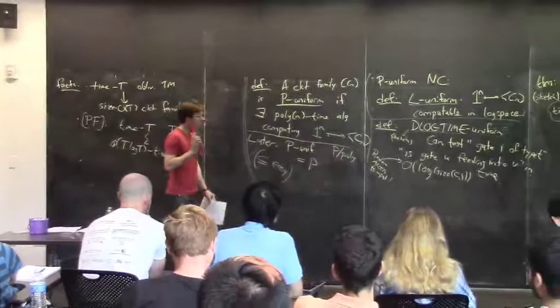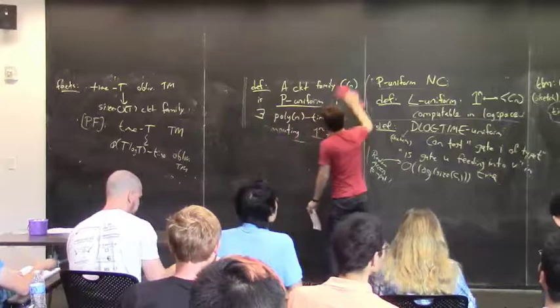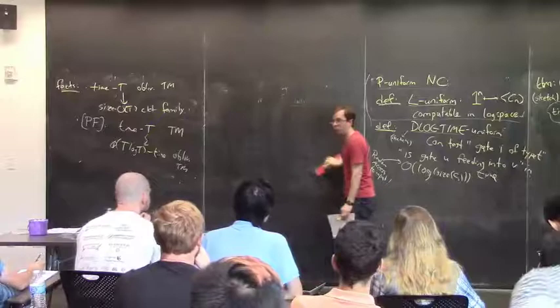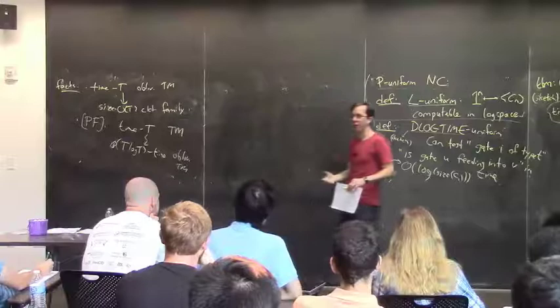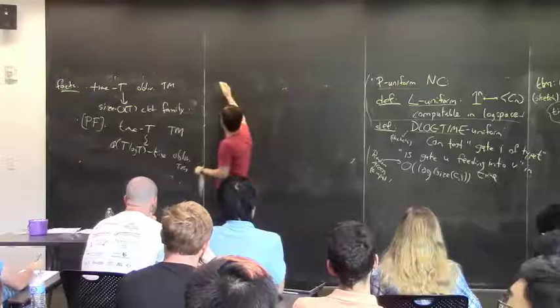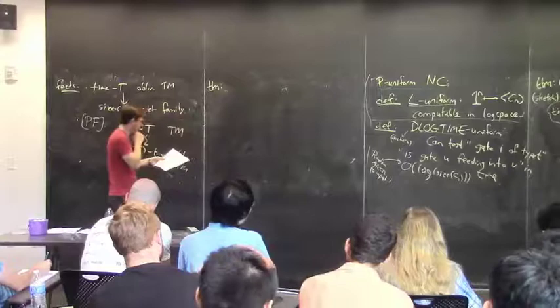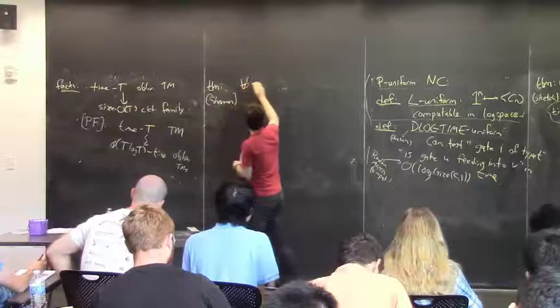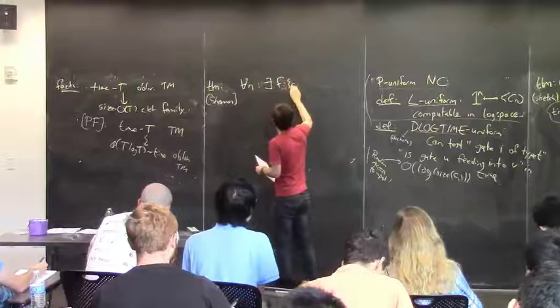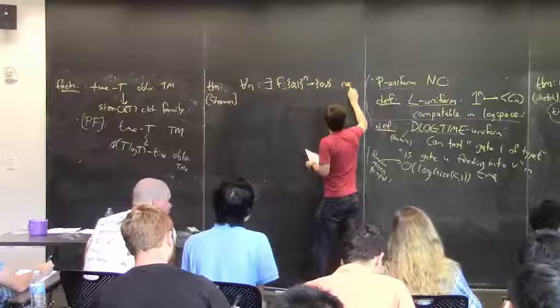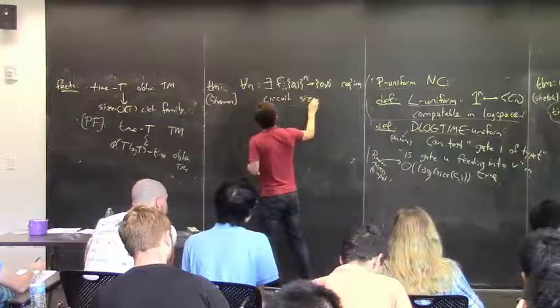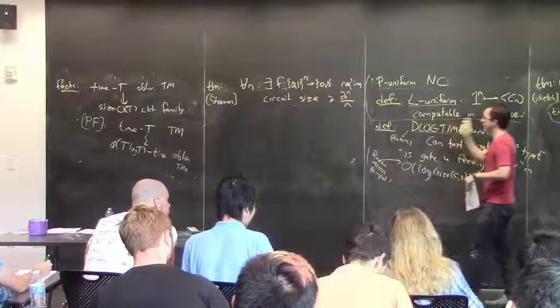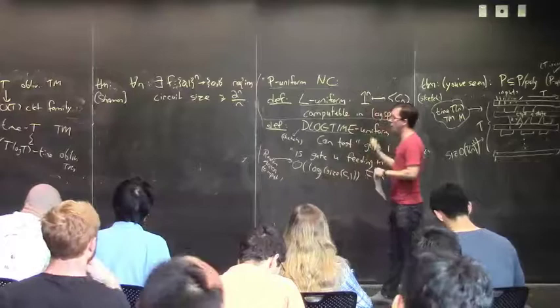One interesting thing about circuits: if you don't impose uniformity, they can compute any function. Any Boolean function can be computed by a circuit — in fact by a DNF, which is a depth-2 circuit. Shannon in 1949, who kind of invented circuits, proved two famous facts. The first is a lower bound using an early application of the probabilistic method: for all n, there exists a Boolean function on n inputs requiring circuit size at least 2^n / n. It's a counting argument — a random function has this property with high probability.